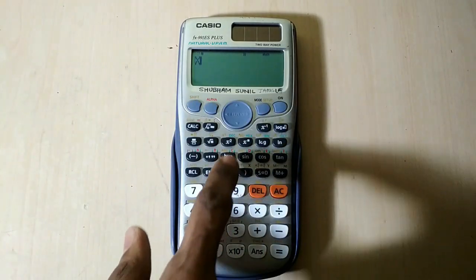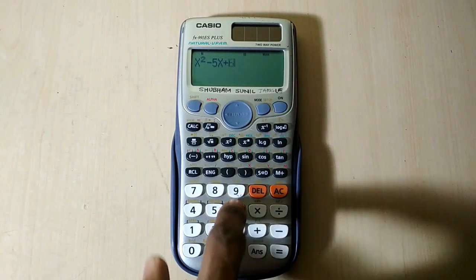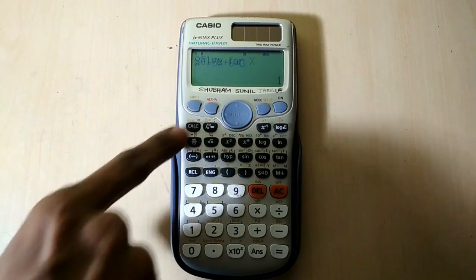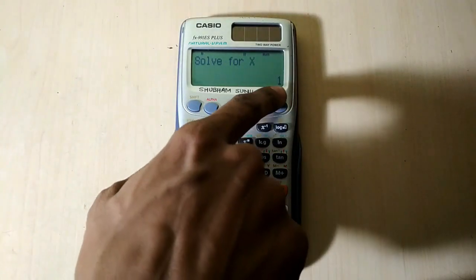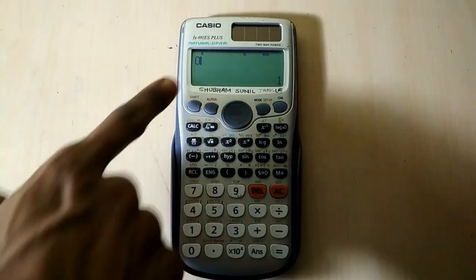Now you write an equation. After using shift solve, just press 0. Here the previous answer is shown - just press 0 and then press the equal button.